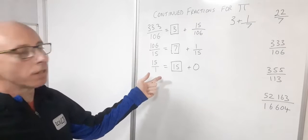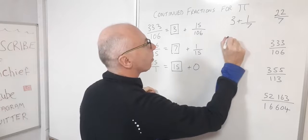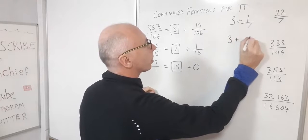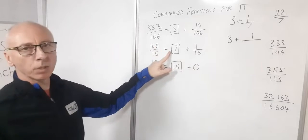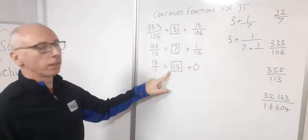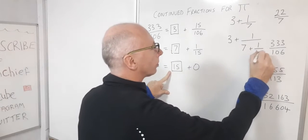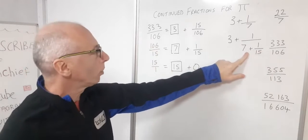So now let's write this as a continued fraction. So this one, 333 over 106, that gives us 3 plus 1 over, now we use this 7 plus 1 over 15. So that's this in continued fraction format.